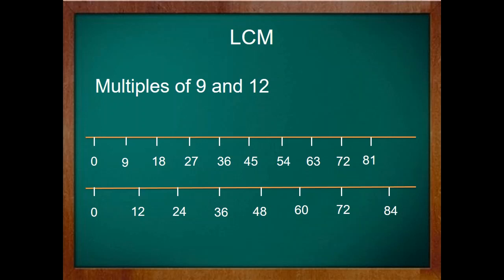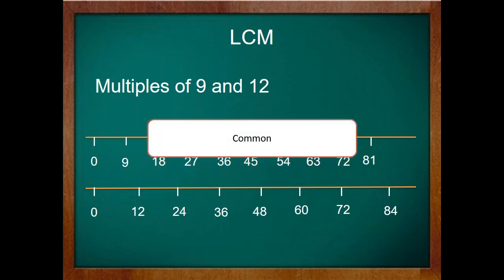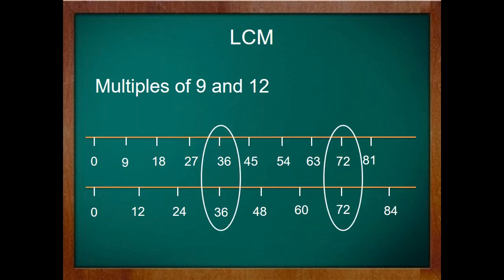Now let's pick the second term in LCM that is common. So we have to find the multiples that are common between these two lists of numbers. So we can see that 36 and 72 are the only numbers that are common in these two lists.